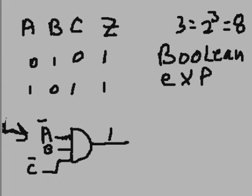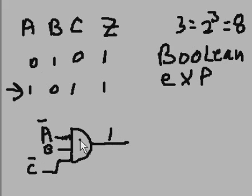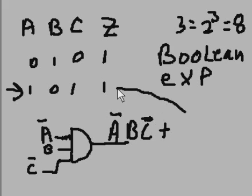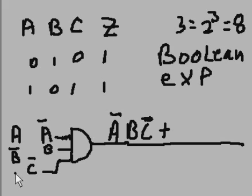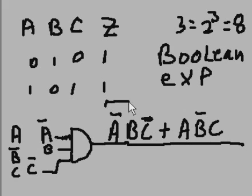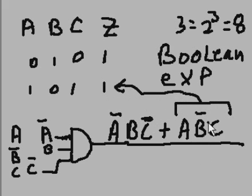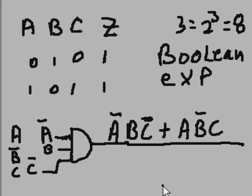Or, for the second row where Z=1 — inputs A=1, B=0, C=1 — how would you get that to become a 1? If A came in as is, that would be okay. If B came in as is, you'd have to NOT that to make it a 1. If C came in as is, that would be okay since C is 1. So we write: OR A, B-not, C. The full Boolean expression is: A-not, B, C-not OR A, B-not, C — and that gives a 1 output.